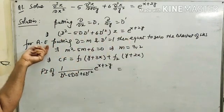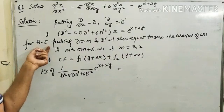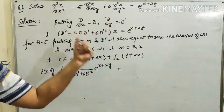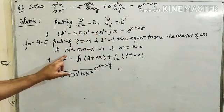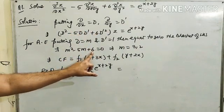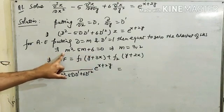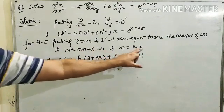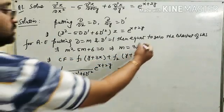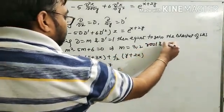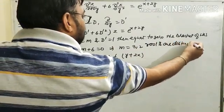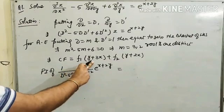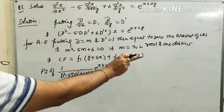We find the auxiliary equation by putting D equals m and D' equals 1 and equating the bracket of the LHS to 0. So m² minus 5m plus 6 equals 0. Solving this quadratic equation, we get two roots: 3 and 2, both distinct. As stated in the previous lecture, the CF is equal to f₁(y plus 3x) plus f₂(y plus 2x).